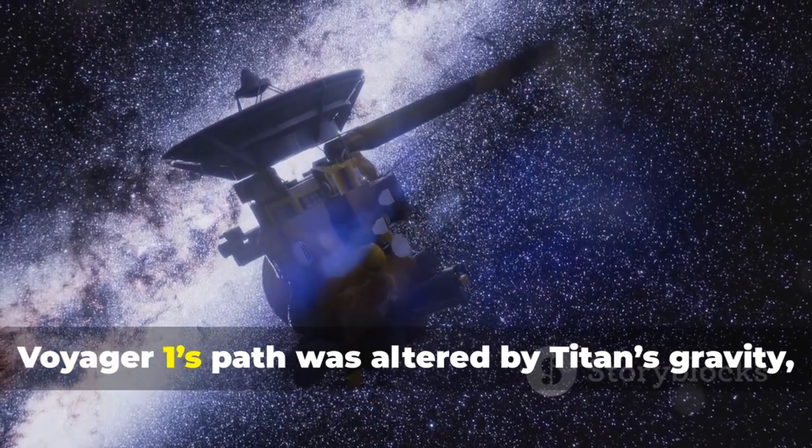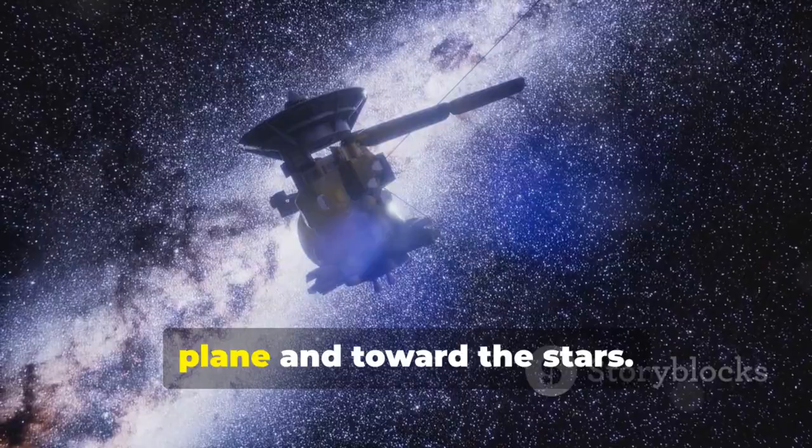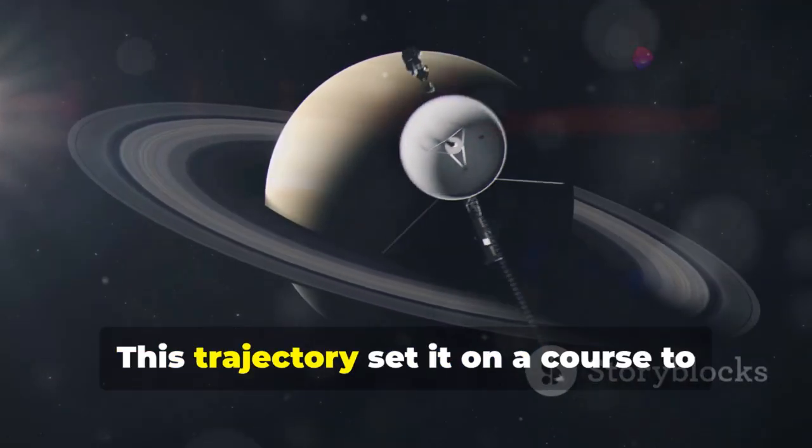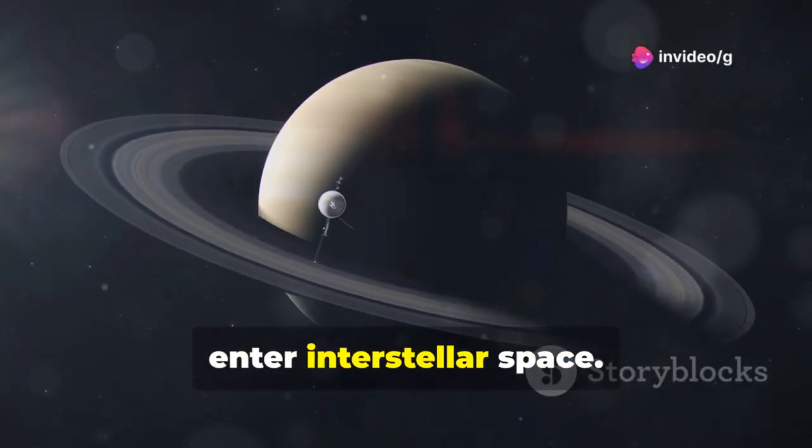After Saturn, Voyager 1's path was altered by Titan's gravity, sending it out of the solar system's plane and toward the stars. This trajectory set it on a course to become the first human-made object to enter interstellar space.